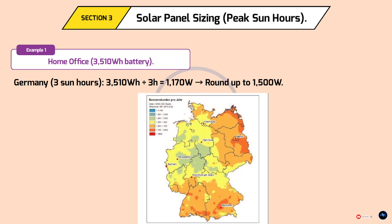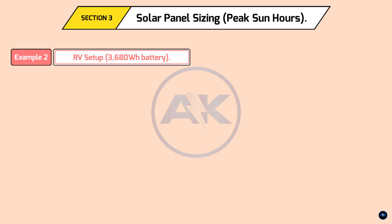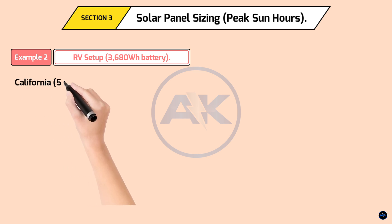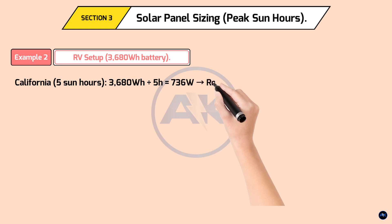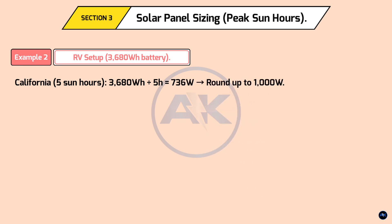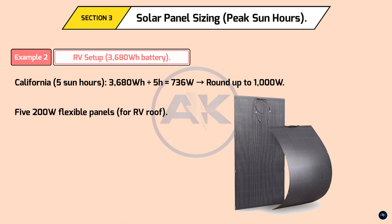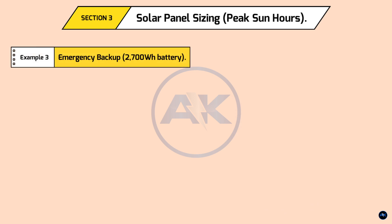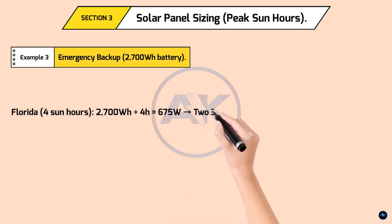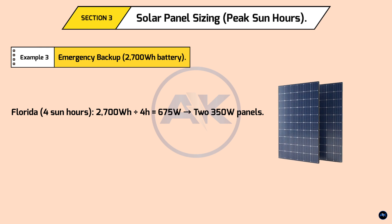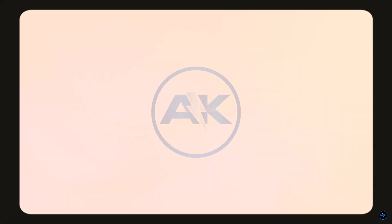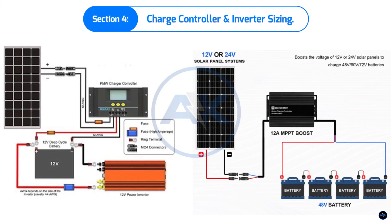Example 2: RV setup — 3,680 Wh battery. California (5 sun hours): 3,680 ÷ 5 = 736 watts, round up to 1,000 watts — five 200W flexible panels for the RV roof. Example 3: Emergency backup — 2,700 Wh battery. Florida (4 sun hours): 2,700 ÷ 4 = 675 watts — two 350W panels. Always over-panel by 20 to 30% for cloudy days and inefficiencies.